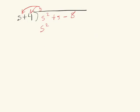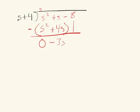Put it in parentheses and subtract. S squared minus s squared is going to be zero, s minus 4s is negative 3s. Bring down the negative 8, and we have s times what gives me negative 3s, so it'll be negative 3.